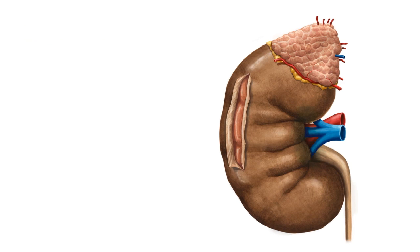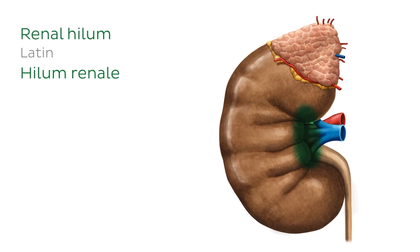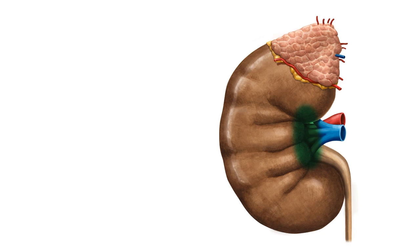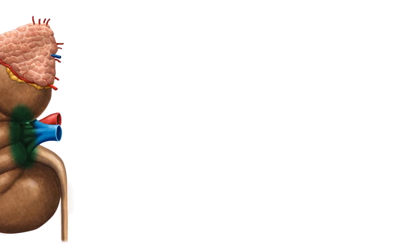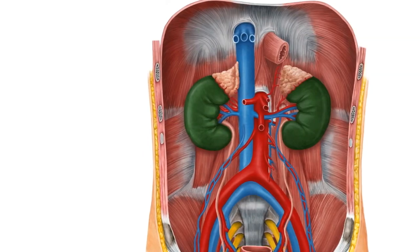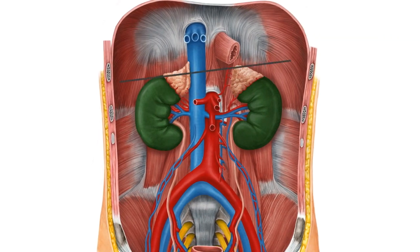At the medial border of each kidney is the renal hilum, where the renal arteries, renal veins, and the renal pelvis enter and leave the kidneys. Note that the right kidney sits slightly lower than the left kidney, since it sits posterior inferior to the liver — basically underneath it.